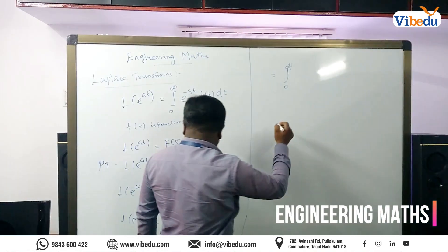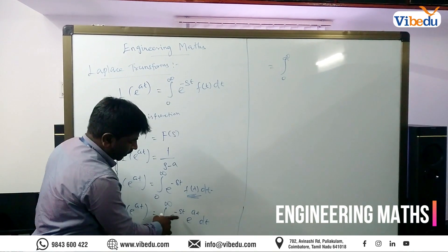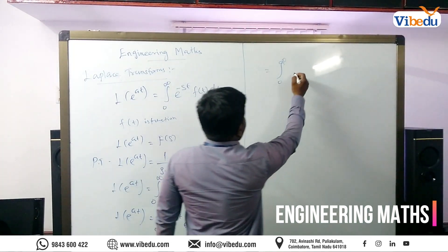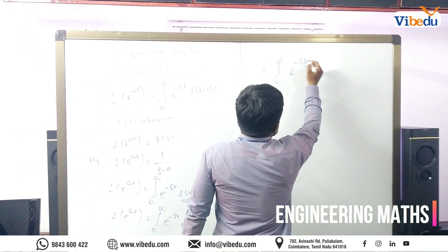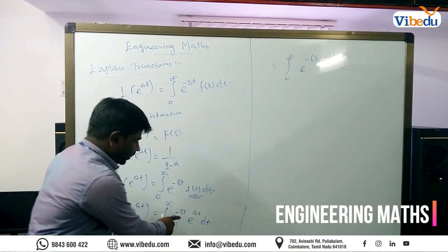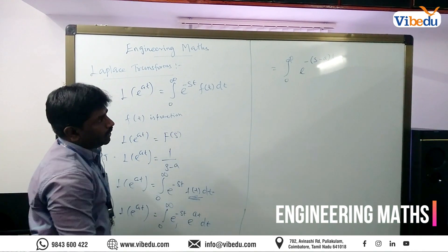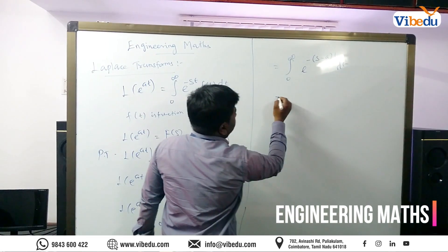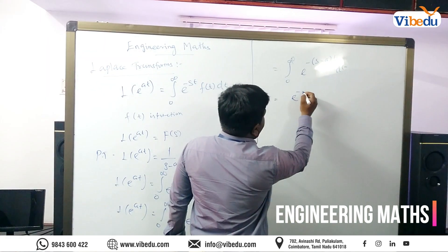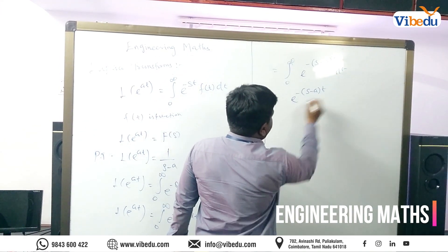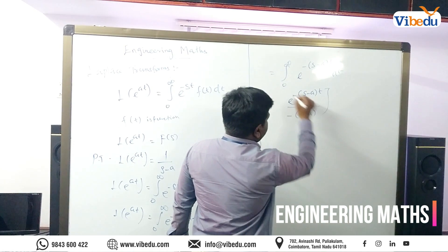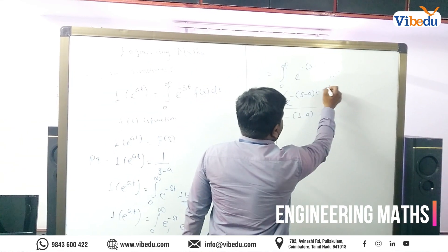So in the integral from 0 to infinity, e^(−st) times e^(at) — since the base is the same, we can write e^(−(s−a)t). Taking t as the common variable and integrating with respect to t gives e^(−(s−a)t) divided by (−(s−a)), with the limit from 0 to infinity.